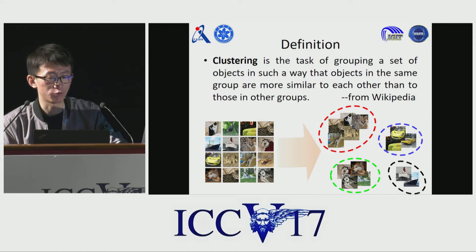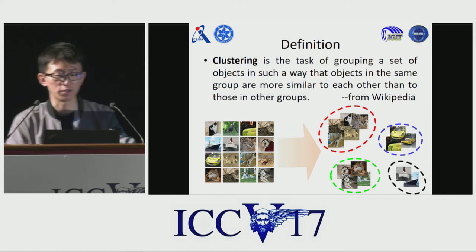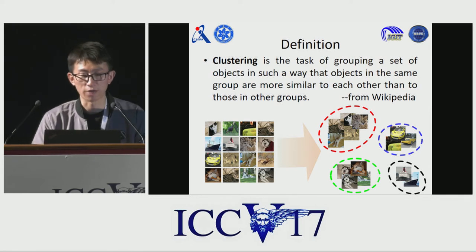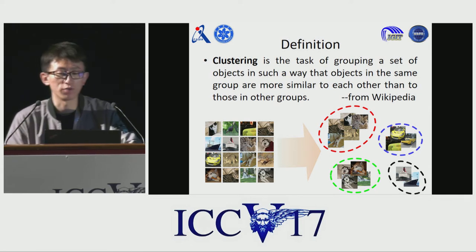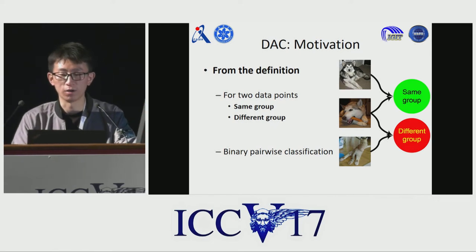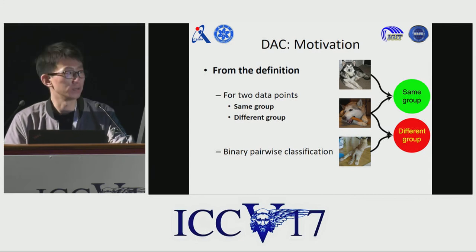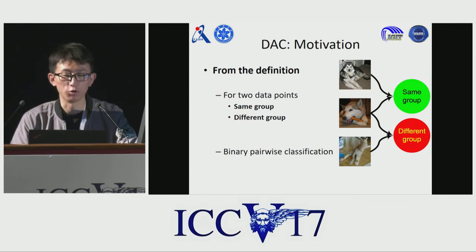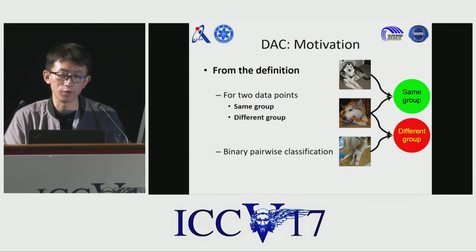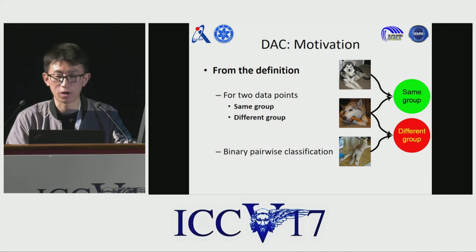Let's rethink the clustering task. What is clustering? From the definition, clustering is a task that groups similar objects into one class and groups dissimilar objects into different classes. That is, clustering can be considered as a binary pairwise classification problem. For two samples, they belong to the same group or different groups only. Then we can rethink clustering as a binary pairwise classification.